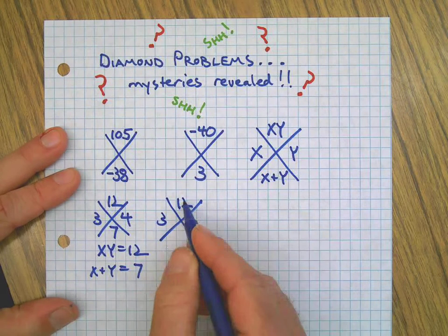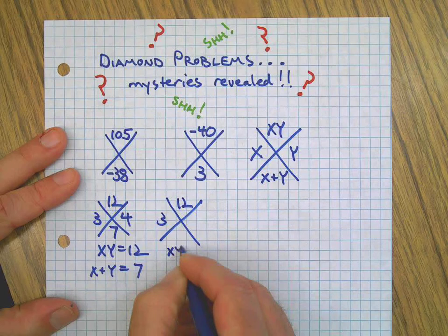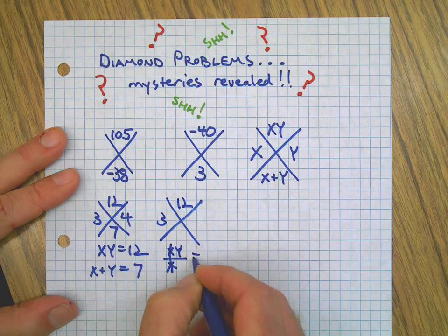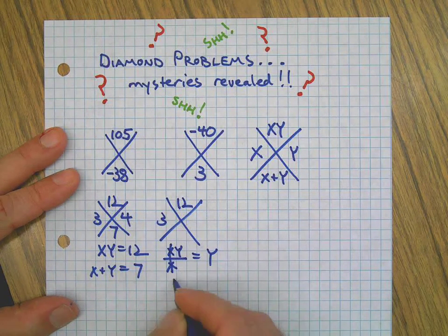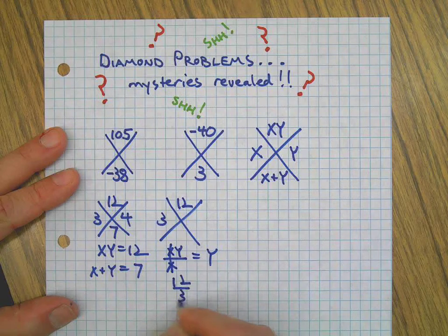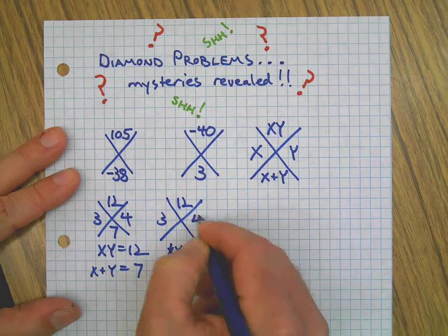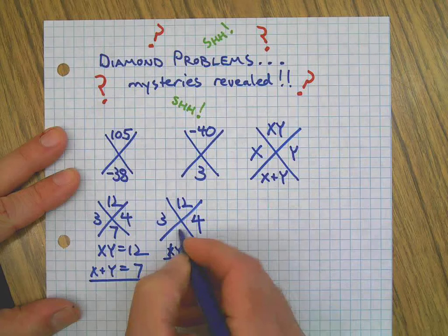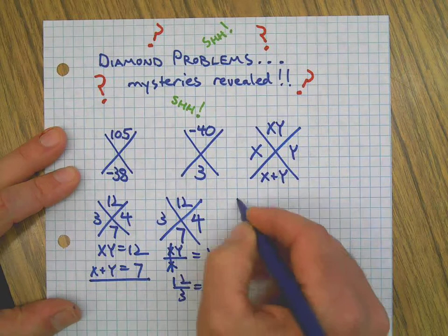When you're given the x and the y, if you divide by the x that equals the y. So in this case, 12 divided by 3 equals 4, and then we can simply do that and get the bottom.